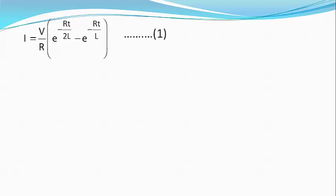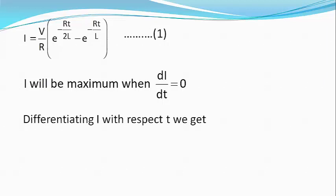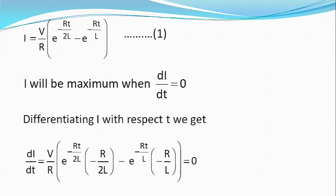The current I will be maximum when dI by dt equals 0. Therefore, let us differentiate I with respect to time t and we get dI by dt equals V divided by R, bracket starts, e raised to power minus RT divided by 2L into minus R divided by 2L,